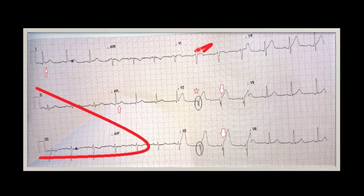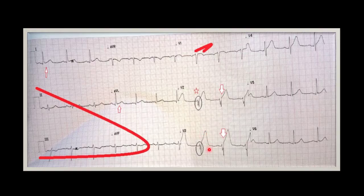The first big thing is that there is very poor R wave progression. If you look at V1 carefully, you will notice that this ST segment elevation is concave. This is what we call a fragmented QRS complex, which indicates myocardial scar. These are tall T waves that are broad-based. This indicates an anteroseptal myocardial infarction.